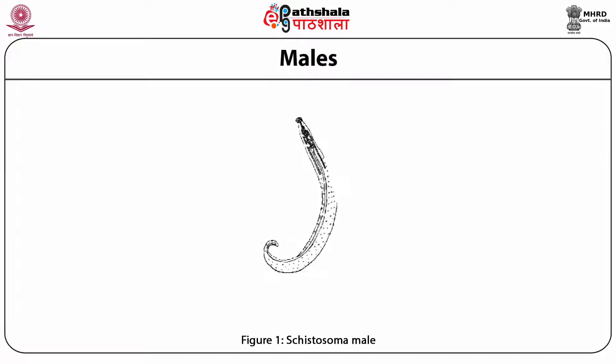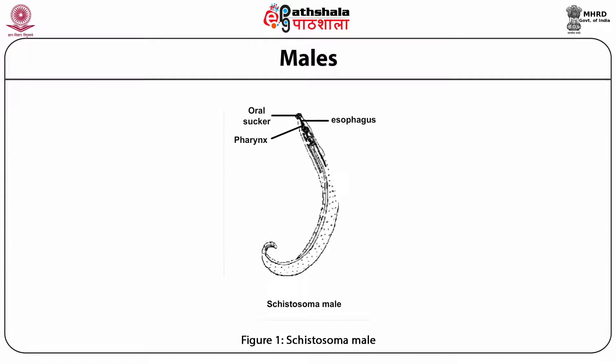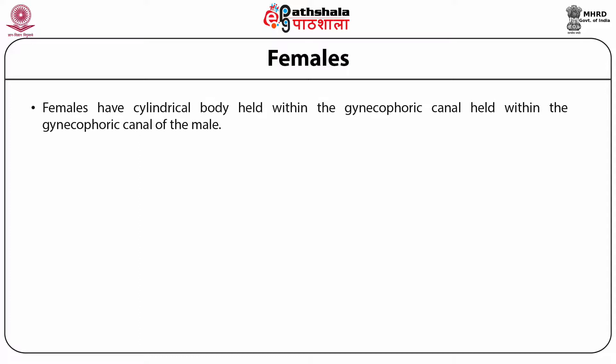Numerous small tubercles cover the body wall of the worm. The membranocalyx is a bilayer external part of the tegument which is renewed and shed continuously. The bottom of the oral sucker is the anterior extremity from where the digestive tube begins, showing a bifurcated esophagus that reunites to form a single blind caecum — the intestine ends blindly. This figure shows Cystosoma male, containing oral sucker, pharynx, acetabulum, testes, gynecophoric canal, tubercles, esophagus, and intestinal caecum.